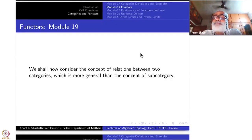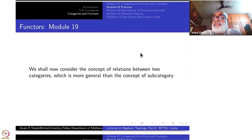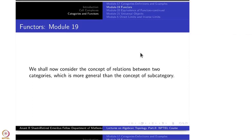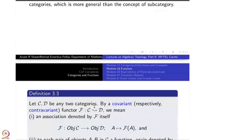Having introduced categories and lots of examples, now we want to study relations between them. One simple relation we have introduced is subcategory — when one category is a subcategory of the other, it's just like inclusion maps. But then we want to have more maps, so let us have a little more generalization of this concept. That is the functor. So let C and D be any two categories.